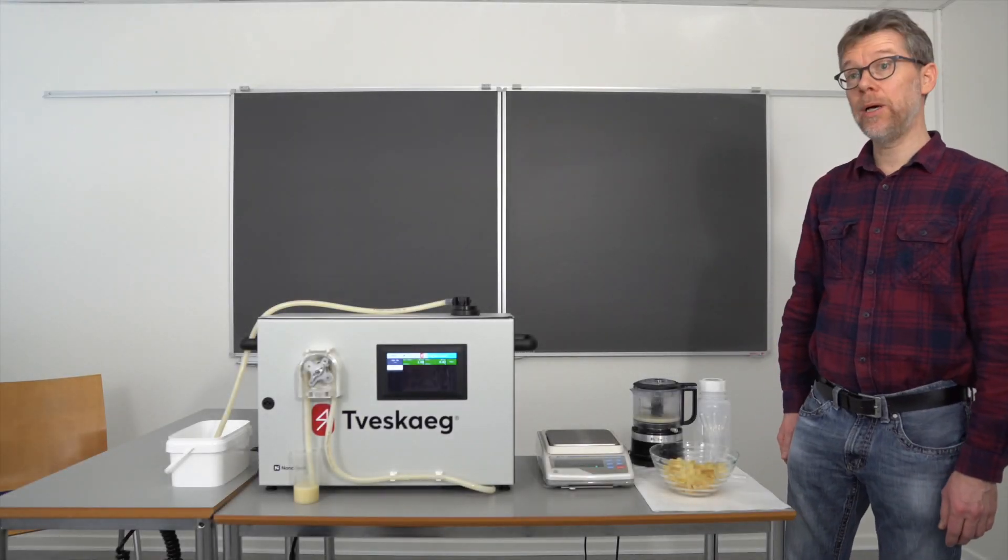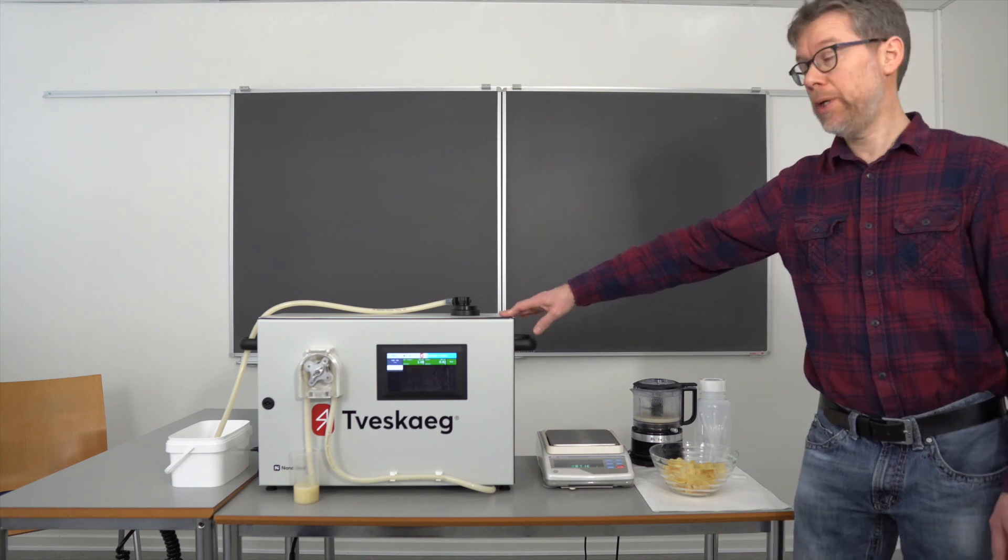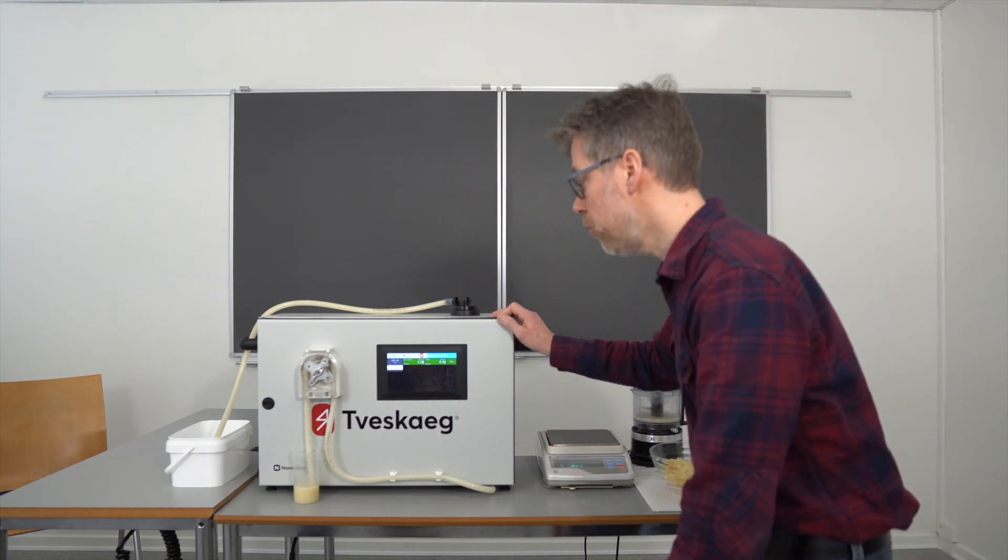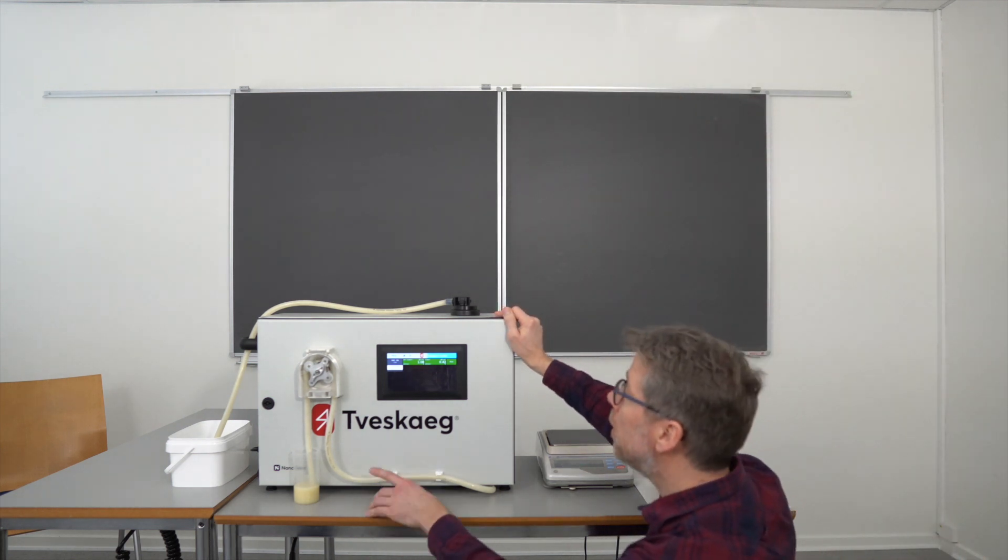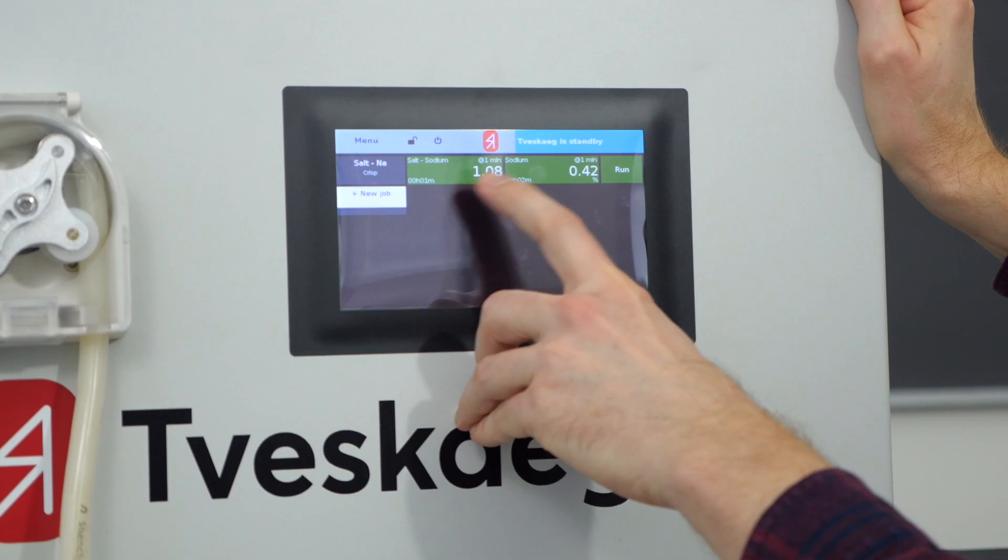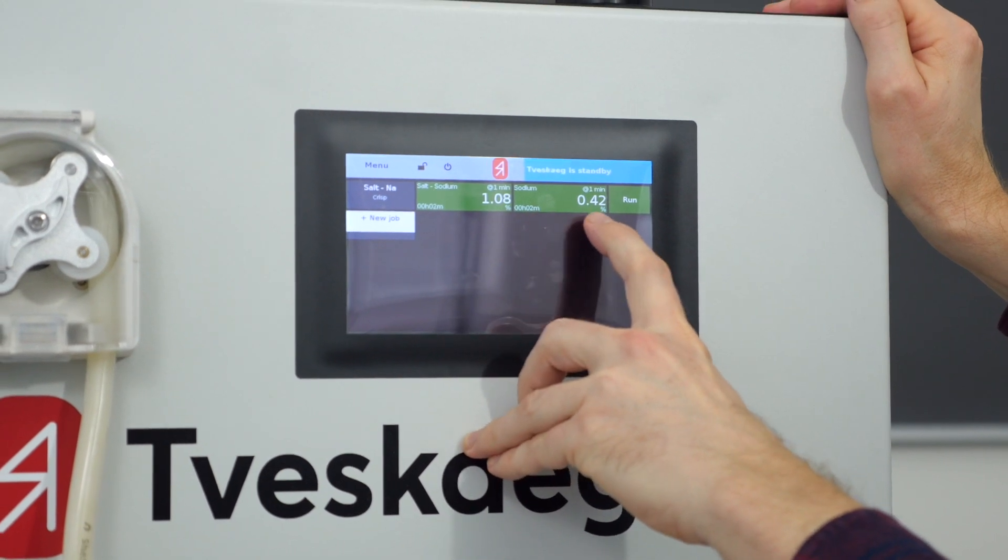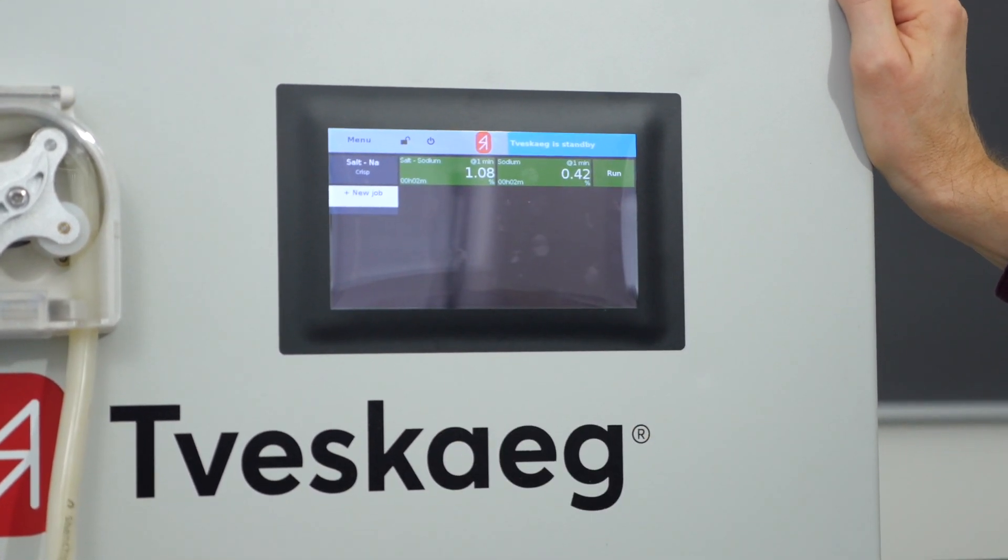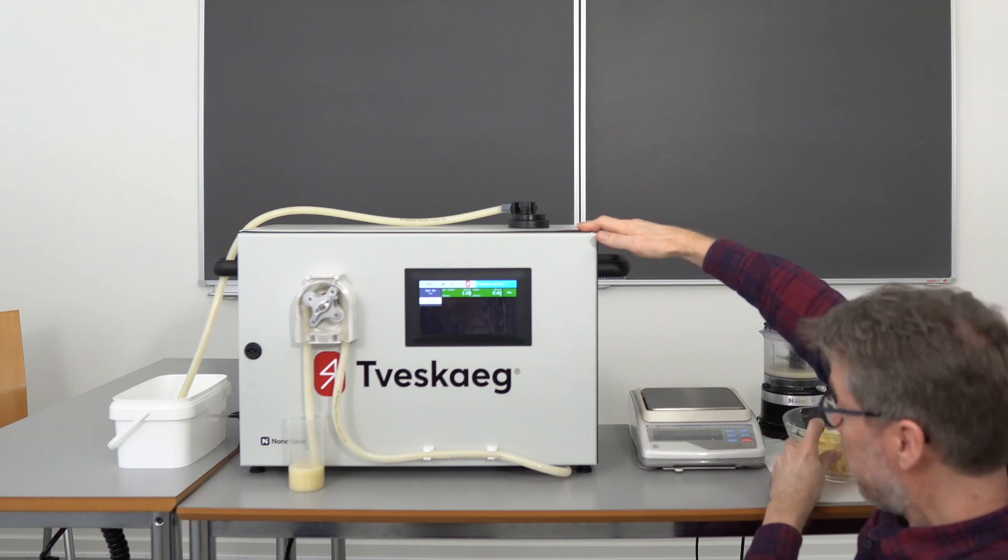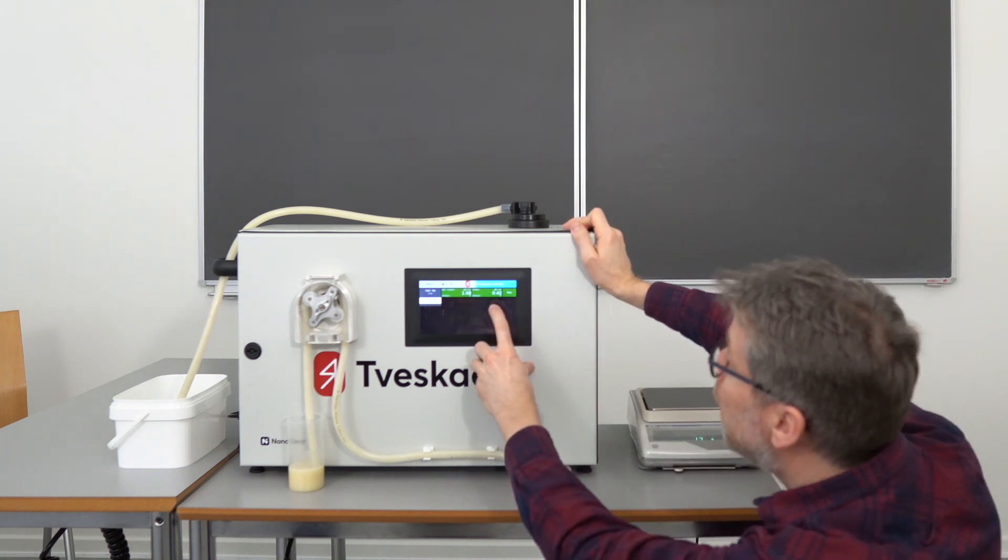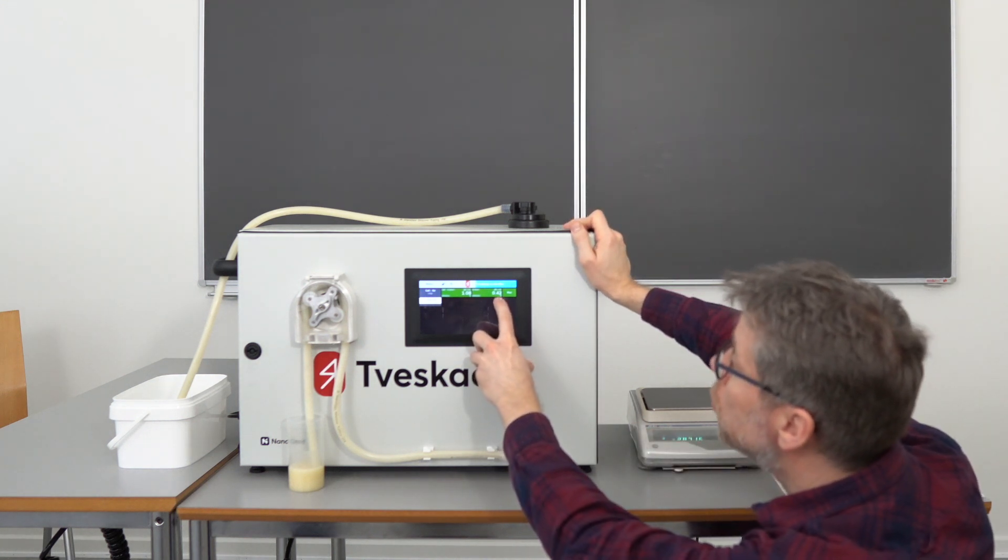Hello again. So one minute is gone and the results are ready actually for the sodium analysis of crisps. And you can see here, we have two numbers here because the job is programmed so that it spits out the sodium content in percentage. So this sample, or basically the original crisp sample that is in this bowl here, has a sodium content of 0.42% sodium.